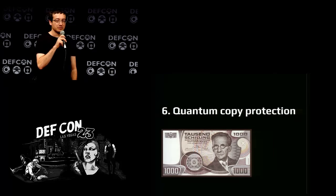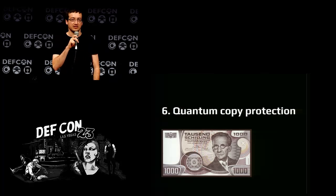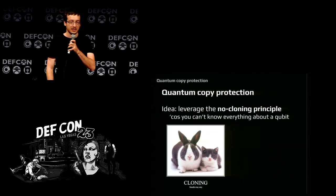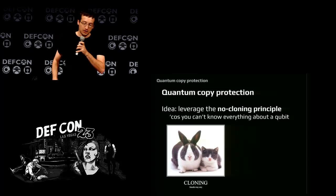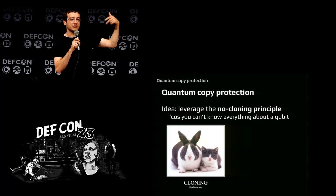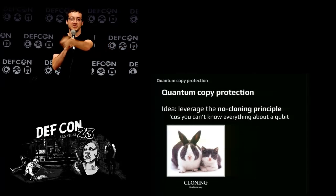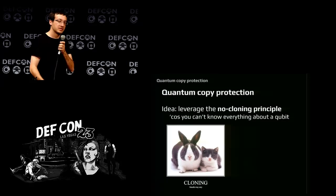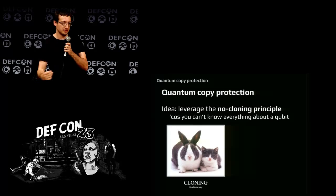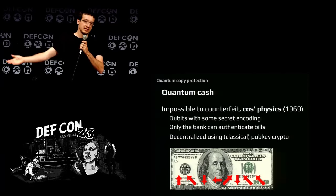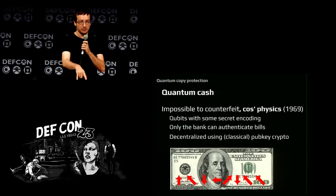Another application is quantum copy protection, leveraging the no-cloning principle. When you have a quantum object, you can know its momentum or its position but not both simultaneously — you cannot know everything about a quantum object, and if you don't know everything, you cannot copy it. In physics this is the no-cloning theorem: you cannot clone a physical object into an exact copy. Applied to quantum cash: you embed qubits on a banknote with an encoding only the bank knows, making counterfeiting physically impossible.